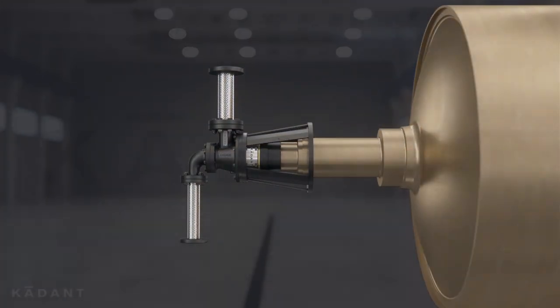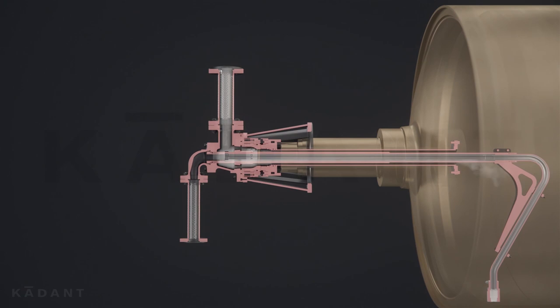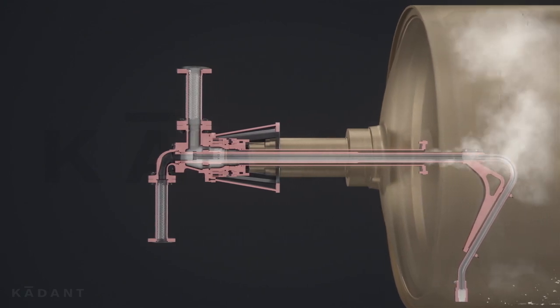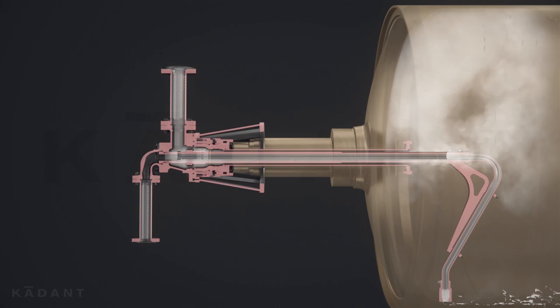To heat the dryer cylinder, steam travels through the rotary joint and into the dryer. As the steam condenses on the inside surface of the dryer shell, it releases its latent heat.